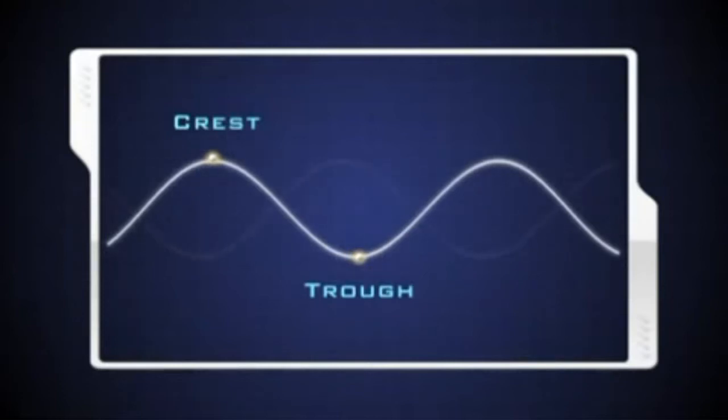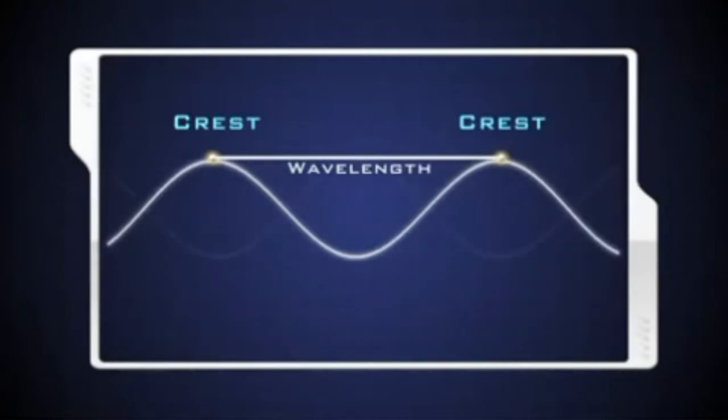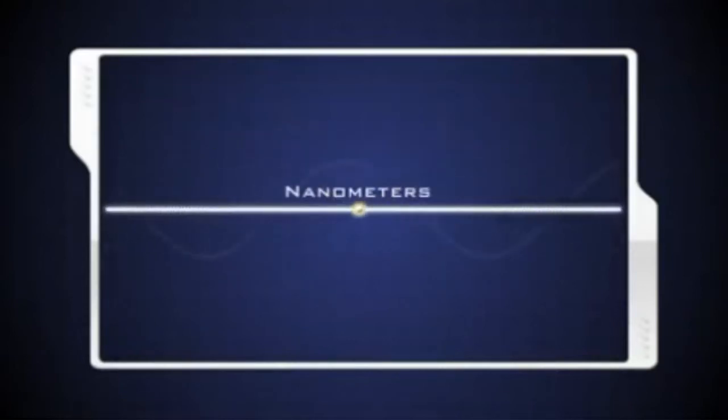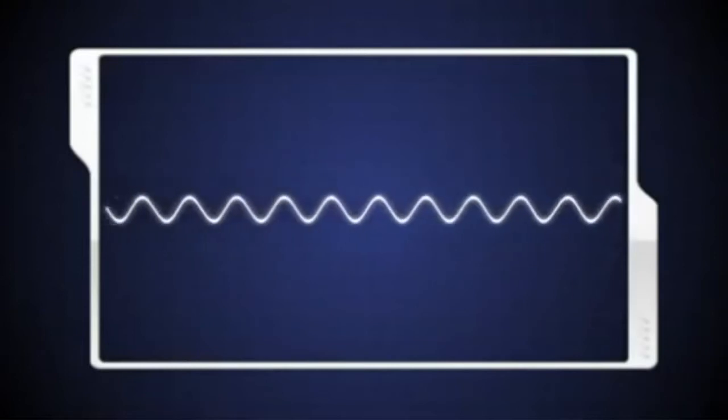EM waves have crests and troughs like ocean waves. The distance between crests is the wavelength. While some EM wavelengths are very long and are measured in meters, many are tiny and are measured in billionths of a meter, nanometers. The number of these crests that pass a given point within one second is described as the frequency of the wave.